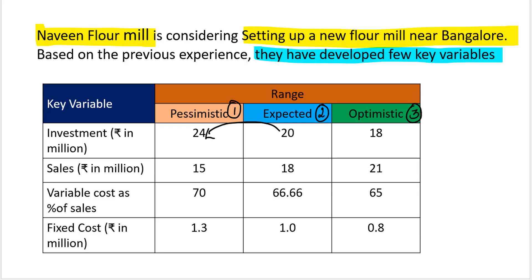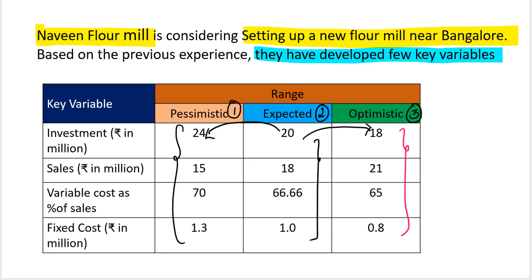In other words, we just want to see what will happen to the investment when it moves from 20,000 to 24,000, or from 20,000 to 18,000 — what will happen to the net present value? So initially, we will generate a cash flow statement for the expected scenario. Based on this, we will do the NPV calculation for a pessimistic scenario and then for an optimistic scenario.